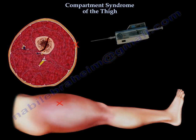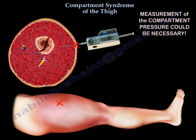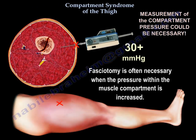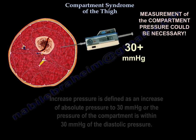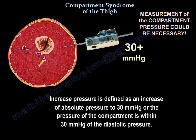Measurement of the compartment pressure could be necessary. Fasciotomy is often necessary when the pressure within the muscle compartment is increased. Increased pressure is defined as an absolute pressure of 30 mmHg, or the compartment pressure is within 30 mmHg of the diastolic pressure.